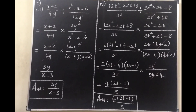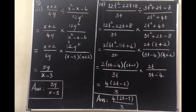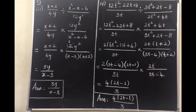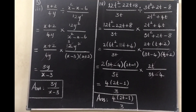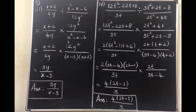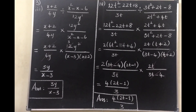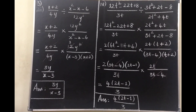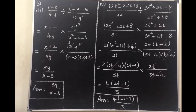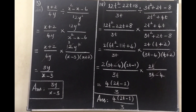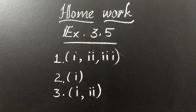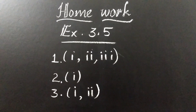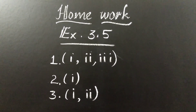In this class we have learned multiplication and division of rational expressions. For multiplication, no change is needed — just factorize if possible, cancel common terms, and multiply the remaining terms. For division of two rational expressions, change it into multiplication form by taking the reciprocal of the second rational expression, then apply the same process. Hope you have understood the concept. From Exercise 3.5: do the first sum (all 3 sub-divisions), second sum (first sub-division), and third (first and second sub-divisions) as classwork.